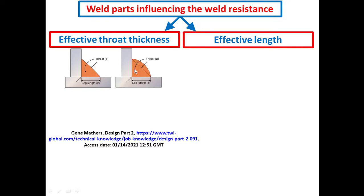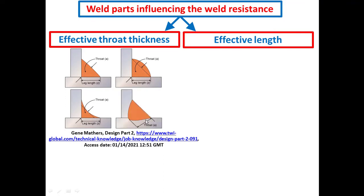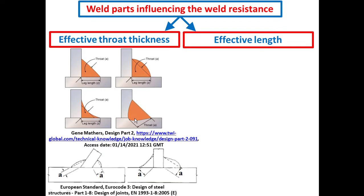For the case of convex fillet weld, the throat is the distance between the root of the surface of the weld and the surface of the weld, excluding the allowance, as indicated by this figure. For the case of deep penetration fillet weld, the throat is determined as depicted by this figure. These figures can help you to determine the throat or the effective throat thickness in the case of fillet welds.